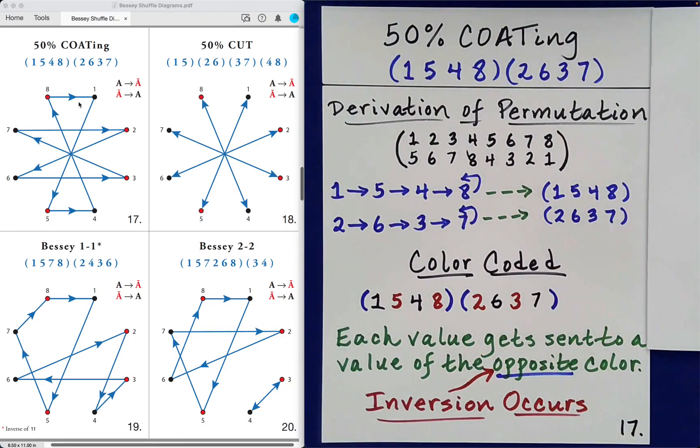If we now look at the graph, which is found at the top left of your screen, we can see how the Bessie Shuffle diagram was constructed. We know that 1 goes to 5, which goes to 4, which goes to 8, which cycles around to 1. So if we look at 1, 1 goes to 5 so it goes down here. 5 goes to 4, straight across. 4 goes up to 8. 8 goes over to 1, and that completes that cycle.